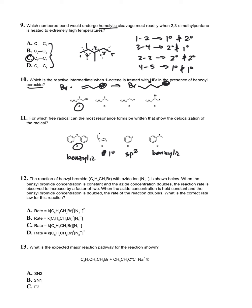Question twelve: the reaction of benzyl bromide with azide ion. When the benzyl bromide concentration is constant and the azide concentration doubles, the reaction rate increases by a factor of two, and vice versa. What is the rate law? This is an SN2 reaction. You have a nucleophile, you have an electrophile. The rate equation is C: you have your rate constant, the concentration of the electrophile, the concentration of the nucleophile. Question thirteen: what is the expected major reaction pathway? We did this in class. This is SN2.